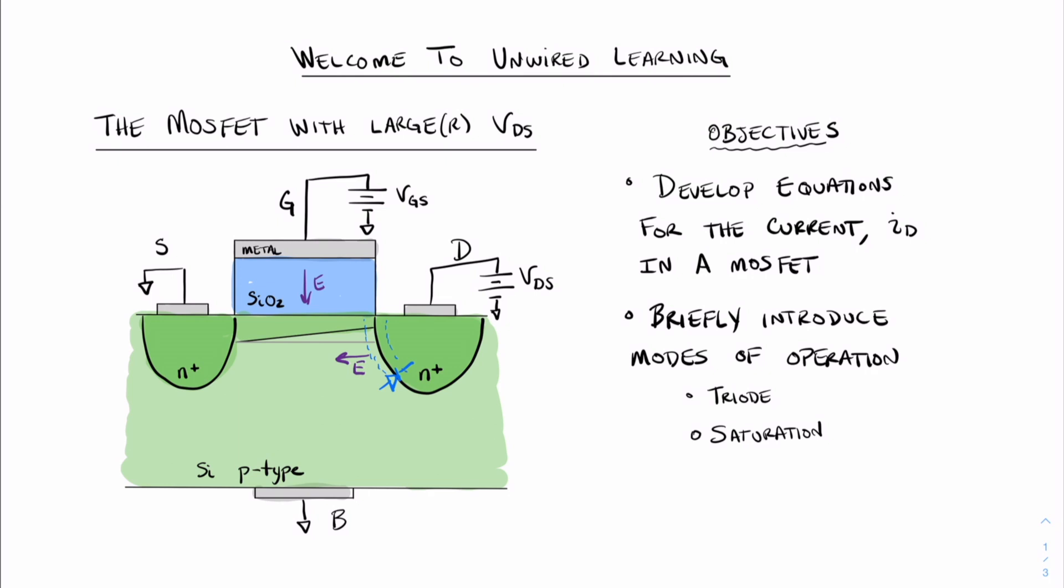This is the real reason, the physical reason, why the channel shape changes. But all of these things and all of these changes occur as a result of increasing the value of VDS.